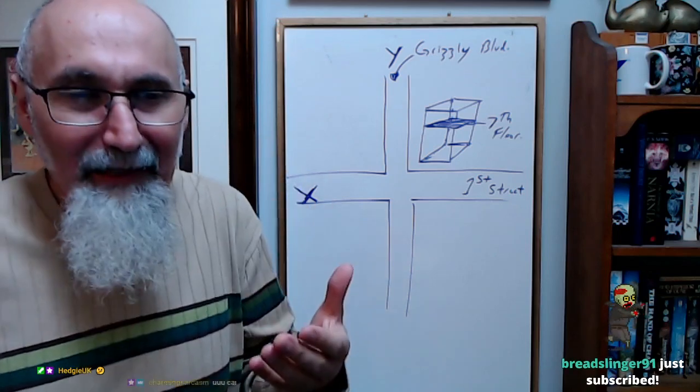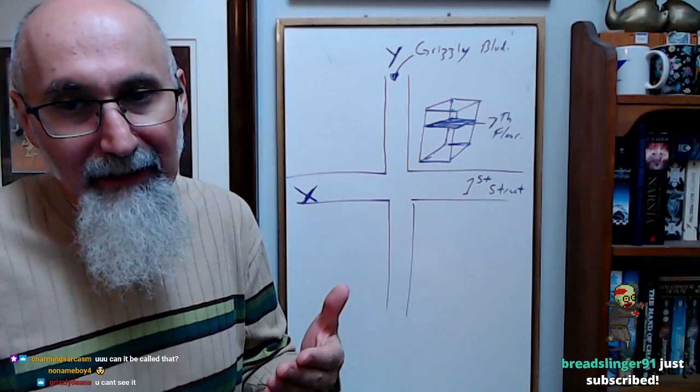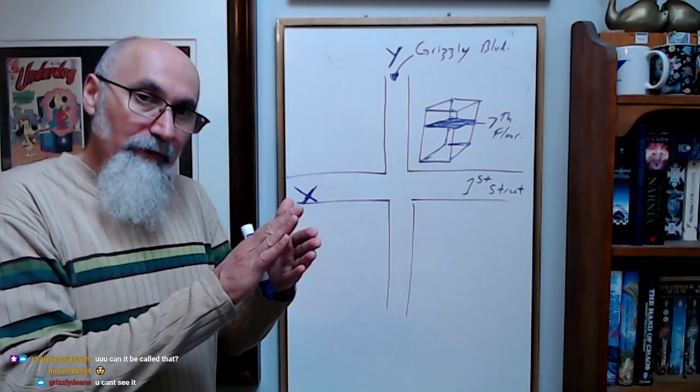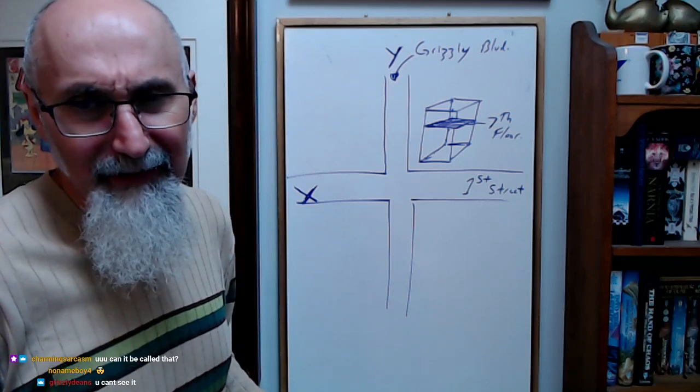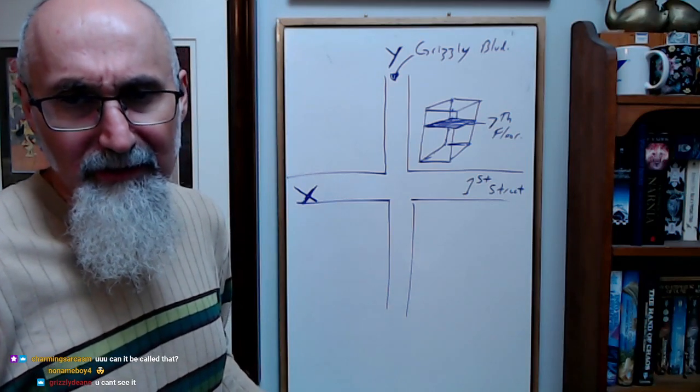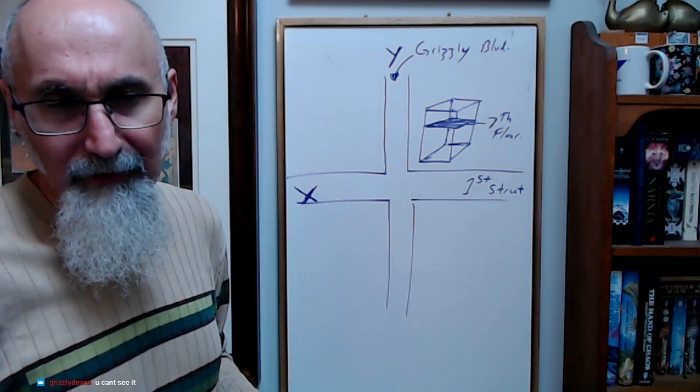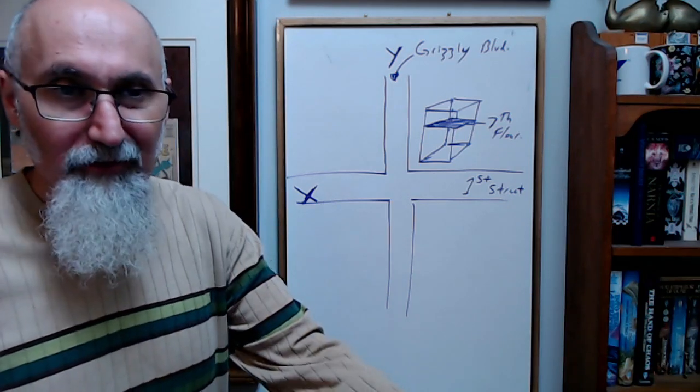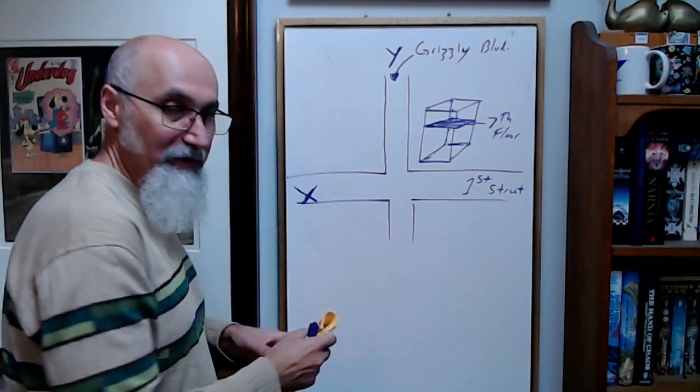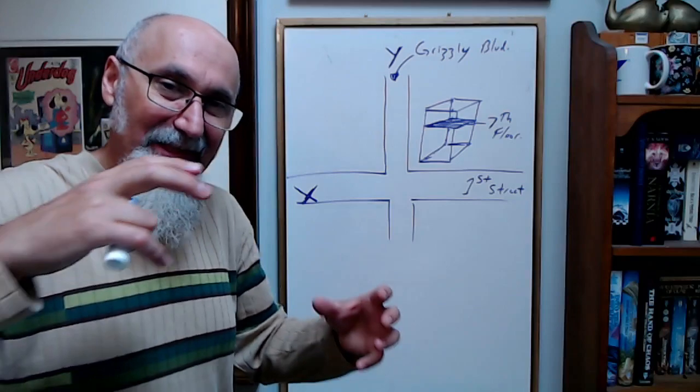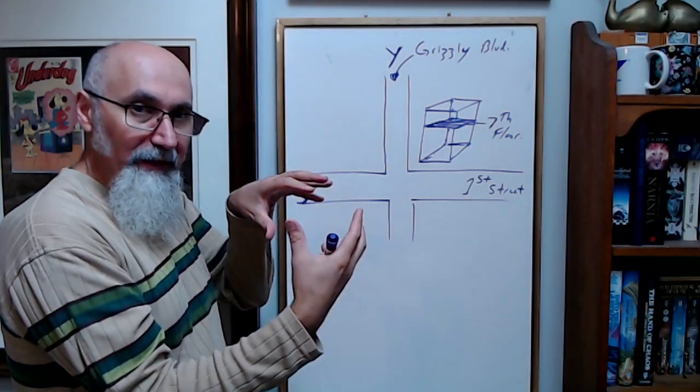We try to understand what 4D looks like through its shadow. [Brett Slinger 91, thank you for the tier one sub.] The way we understand four spatial dimensions is by looking at the shadow of a four-dimensional object in 3D.